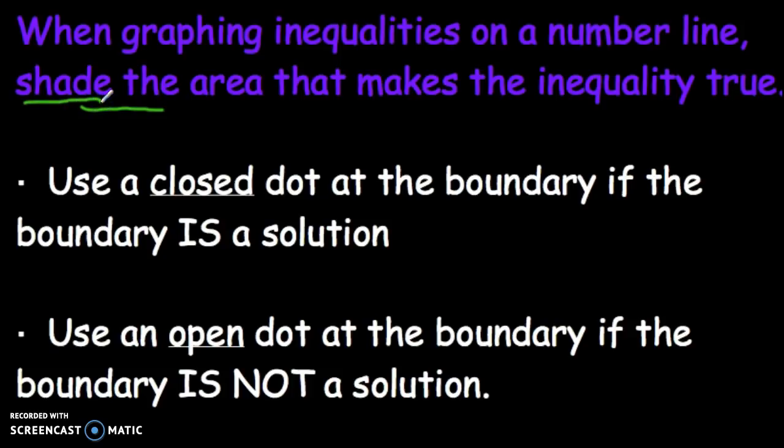Anytime that the boundary is a solution, you use a closed dot at the boundary. That means you're going to take your circle and fill it all the way in. You're going to use an open dot at the boundary if the boundary is not a solution, so you just have a circle like this.